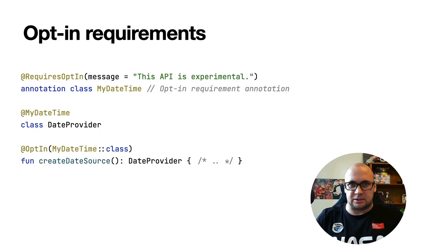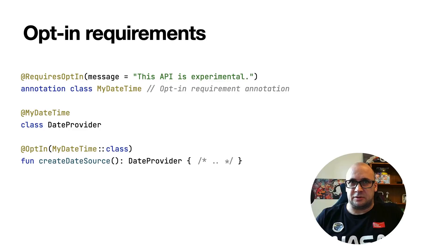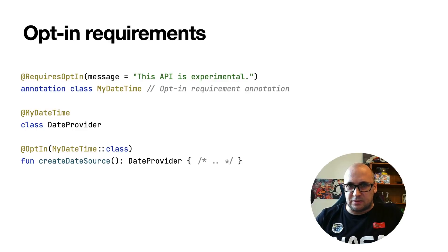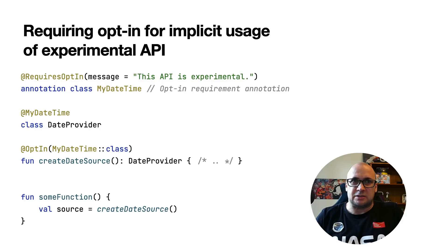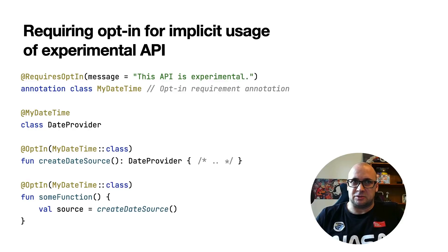I could also use the MyDateTime annotation directly to mark the function instead of using the opt-in annotation. However, it means I'm declaring my function as experimental and I would have to opt-in for the use of this function in some other location in my code. We may say that MyDateTime annotation is a requirement and opt-in annotation is a consent to a specific requirement. So if we consent to the usage of a class marked with requiring opt-in, we don't really propagate the requirements further. But there are still situations where we may use this experimental class implicitly — when using a function that either accepts the experimental class as an argument or specifies it as a return type. The compiler wasn't detecting these implicit usages. Starting from 1.5.30, the compiler detects such situations and requires opt-in even for implicit usages of the experimental API.